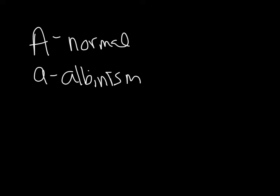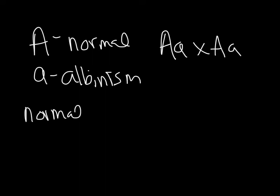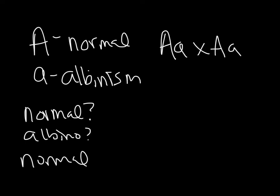The question then says, if two heterozygotes have children — so these are the parents, heterozygous — what's the chance that the child will have normal skin pigment? What's the chance that the child will be an albino? And what's the chance that a normal child will be a carrier of albinism?